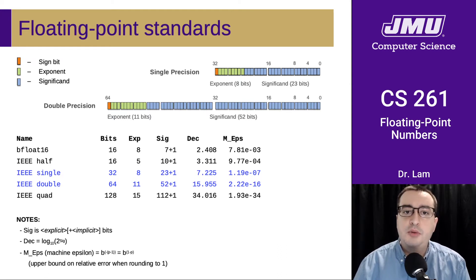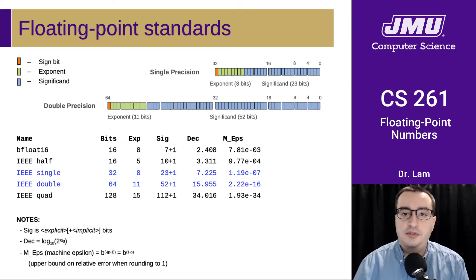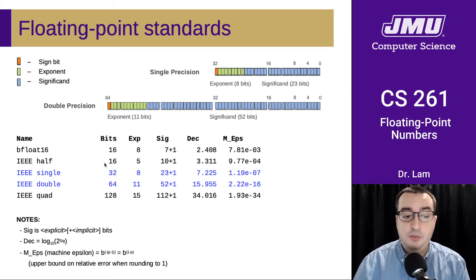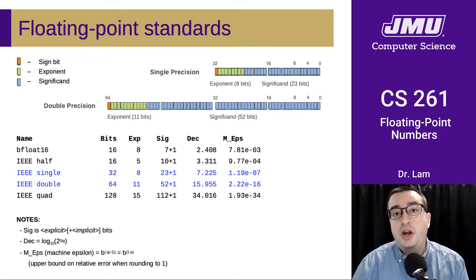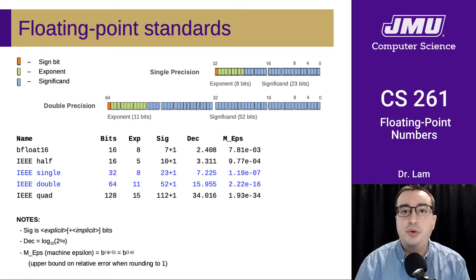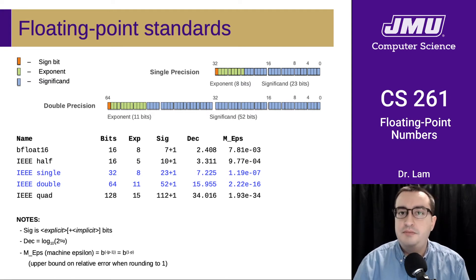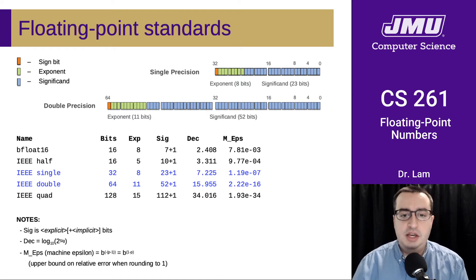Another format that has become more popular recently is BFloat16. It's not a standard yet, but it's being used in a lot of artificial intelligence applications because it preserves the dynamic range of single precision. It's a hybrid of single precision and half precision — the same width as half precision, but with the same number of exponent bits as single precision. This works really well for neural networks, where the fractional part is not as important as the exponent value. You train a bunch of weights and what really matters is the exponent, so you don't need many bits for the significand, but you do need enough bits to store sufficient precision in the exponent.